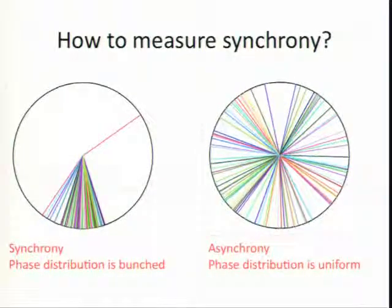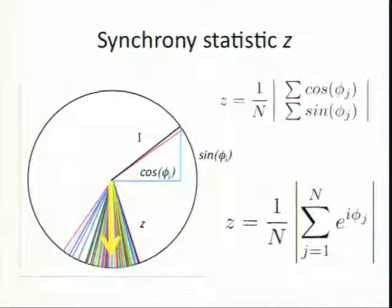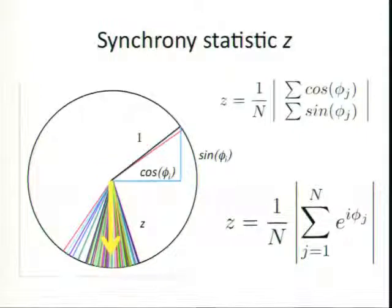Whereas in the asynchronous case, the Xs, positive X, negative X, it's going to cancel out. Positive Y, negative Y, it's going to cancel out. So we can define our synchrony statistics, Z, exactly like that. So it's the length of a vector, a two-dimensional vector, where the X component is just the sum of all of the X components of all the phis. And so in this case, they're on a unit circle. So the X component is just the cosine of phi I. The Y component is just the sine.